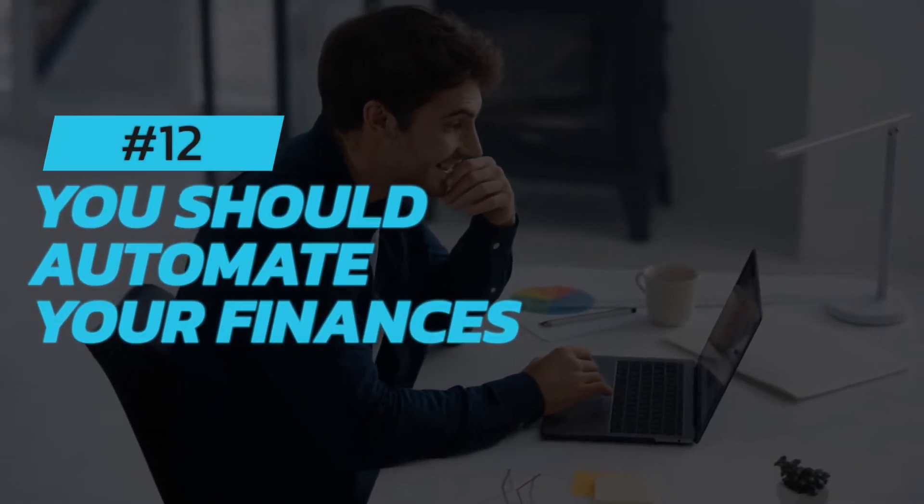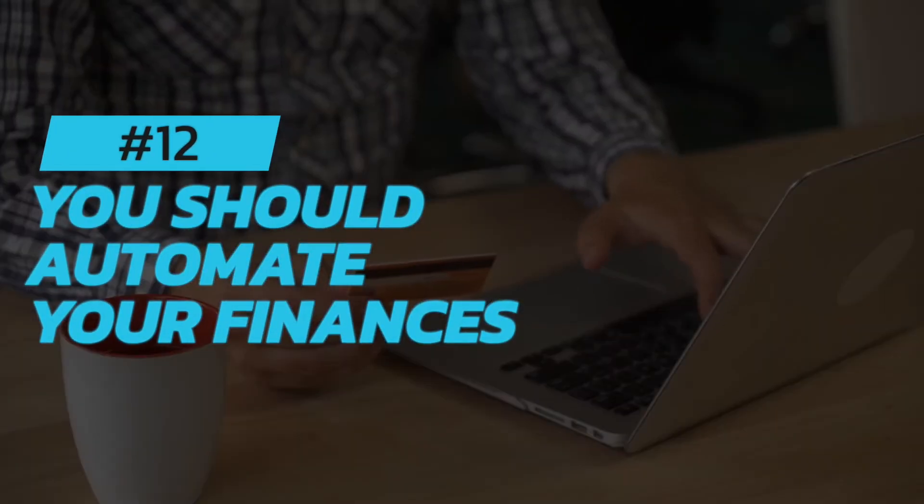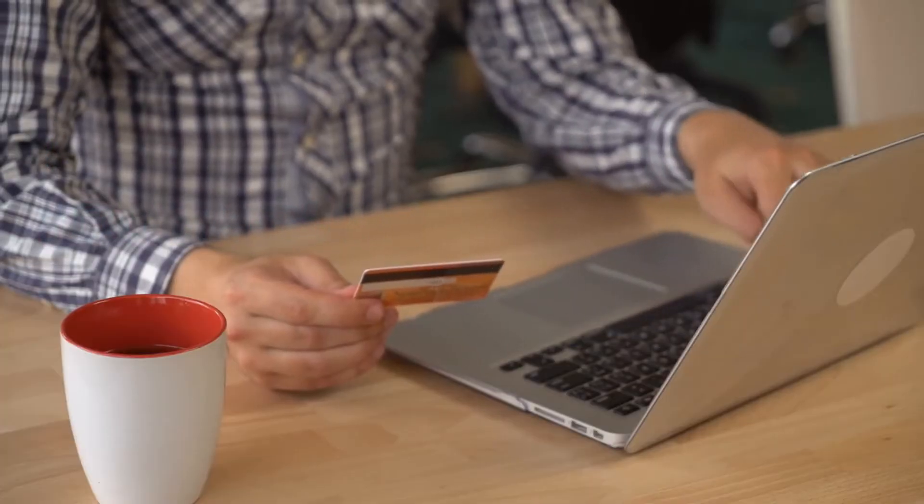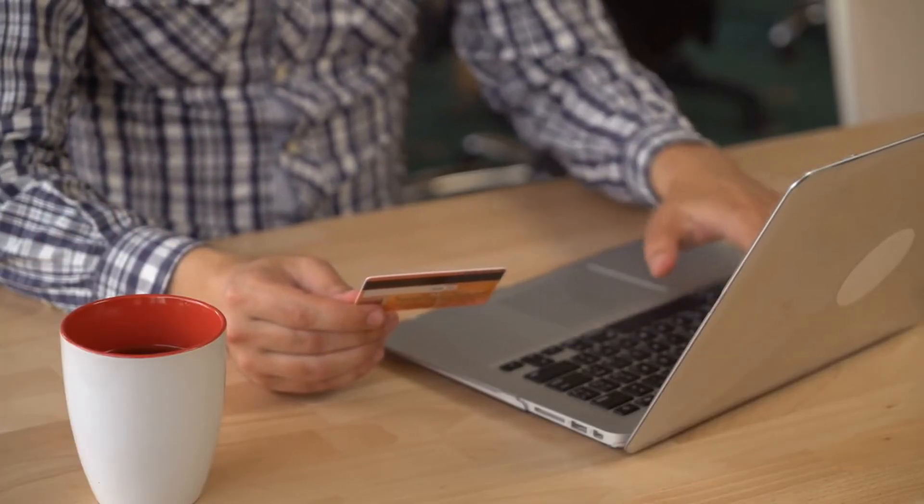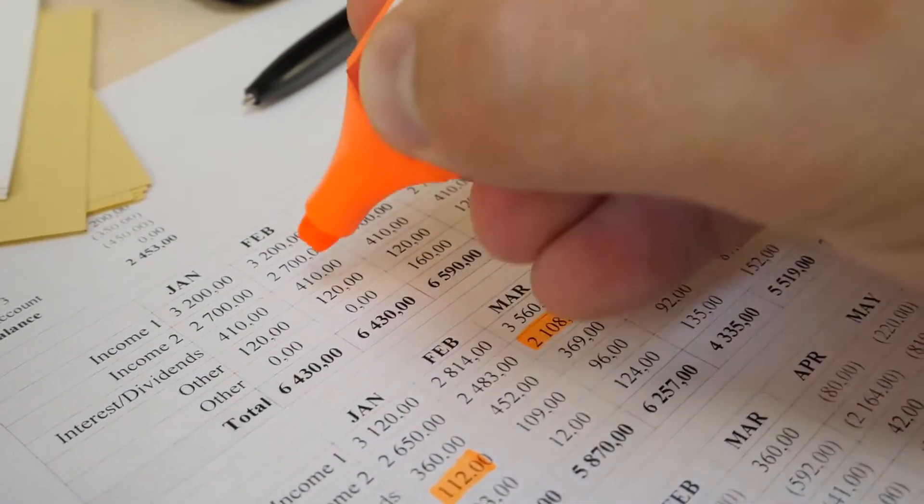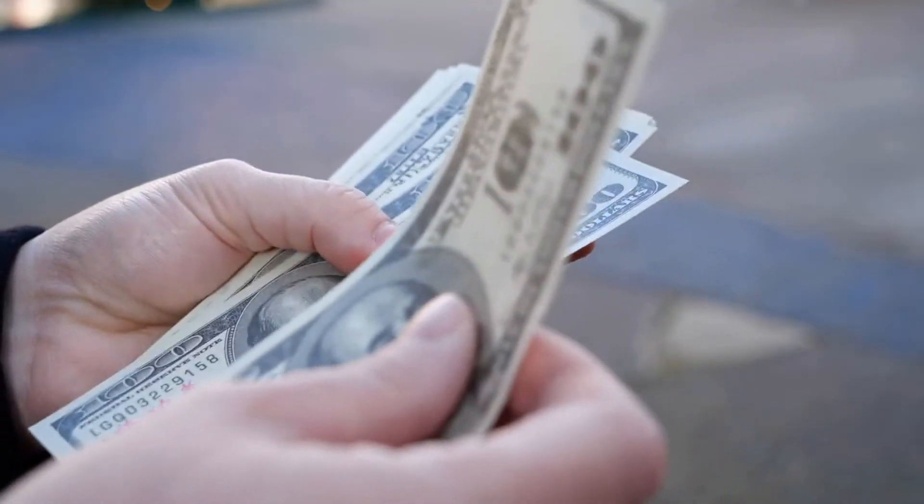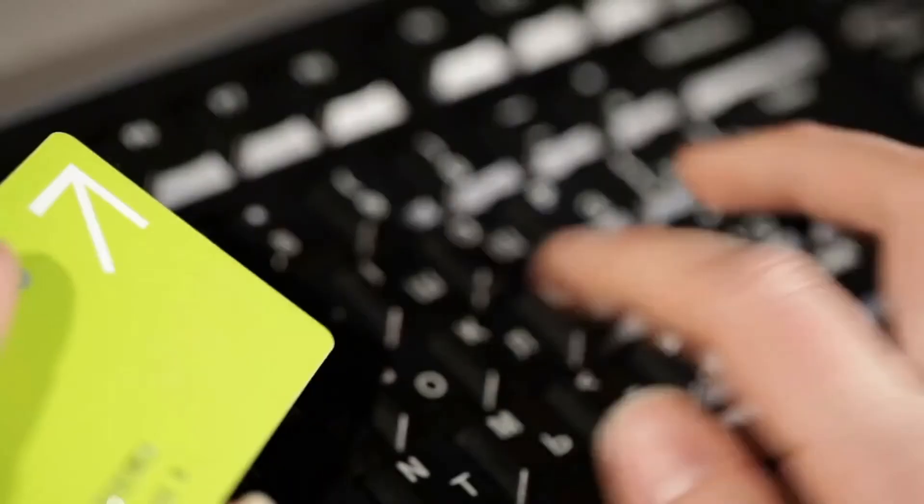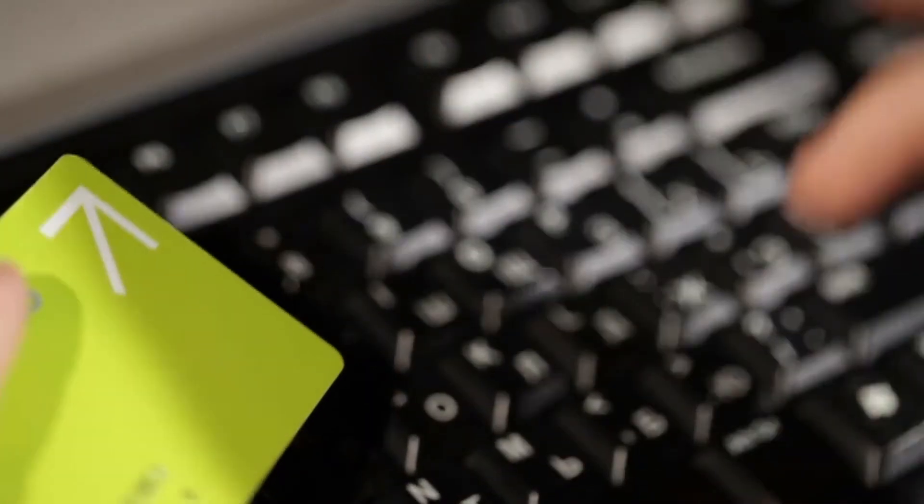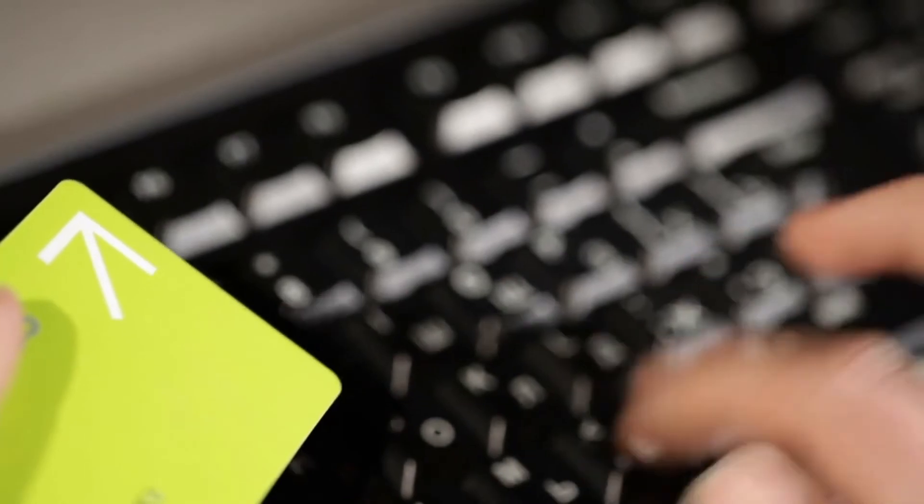Number twelve: You should automate your finances. Automating your finances means setting up automatic payments for bills and savings. This helps you stay on top of your finances and avoid late fees. It also helps you make sure you're saving money each month. To automate your finances, set up automatic payments for your bills and savings. Then, make sure you have enough money in your account to cover the payments.